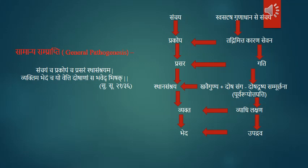Acharya Charak has said in Charak Sutrasthana Chapter 12 that if there is frequent exposure to Ruksha, Laghu, and Sheeta diet, it causes vitiation of the Ruksha, Laghu, and Sheeta guna of Vata. Such kind of food, if taken for a prolonged time or in an inappropriate manner, causes some degree of vitiation of that particular thing.